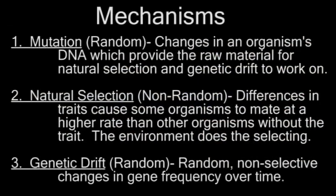The main mechanisms driving evolution are mutations, natural selection, and genetic drift. Random mutations provide the raw information necessary for the other mechanisms to work upon. Natural selection is by definition a non-random process, whereby the environment favors one trait leading to its accumulation in the population.